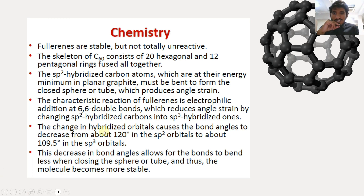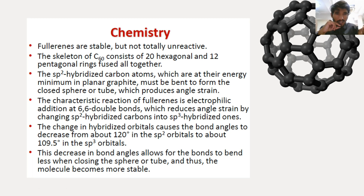The change in angle is from 120 degrees (sp2) to 109.5 degrees (sp3). This decrease in bond angle allows the bonds to bend less when closing the sphere or tube, making the molecule more stable. So when electrophilic addition at the 6-6 double bond occurs, the angle strain is reduced and the molecule becomes more stable.